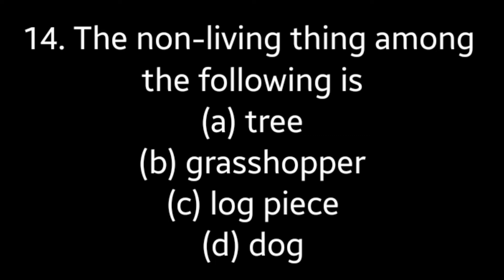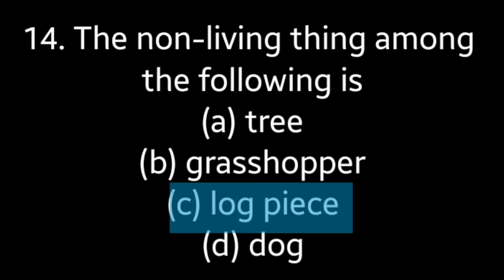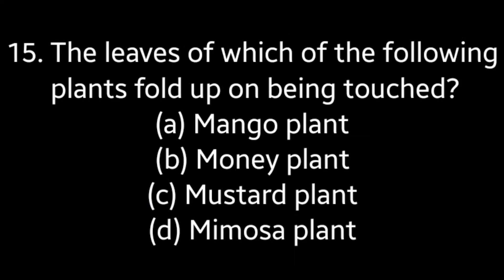Question number 14: The non-living thing among the following is — option A: tree, option B: grasshopper, option C: log piece, option D: doggy. Answer is option C: log piece.